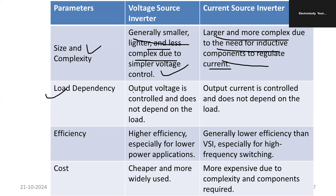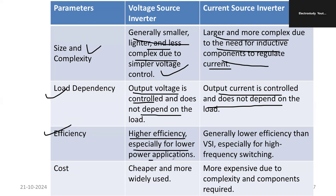Regarding load dependency, the output voltage of a VSI is controlled and does not depend on the load. In the case of the current source inverter, the output current is controlled and does not depend on the load. Regarding efficiency, the voltage source inverter is highly efficient, especially in low-power applications. The current source inverter is generally lower in efficiency but is suitable for very high-frequency switching.